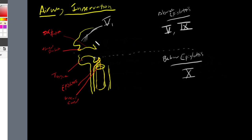The posterior portion of our nasopharynx is going to be supplied by the maxillary branch of cranial nerve 5, which is labeled V2. That is a subset of our cranial nerve 5.